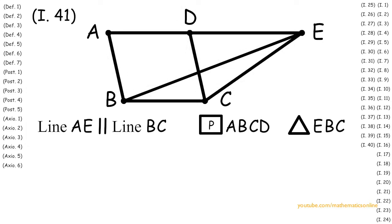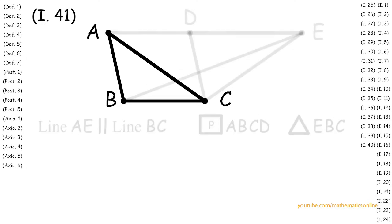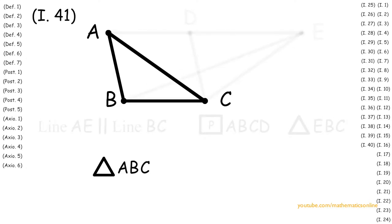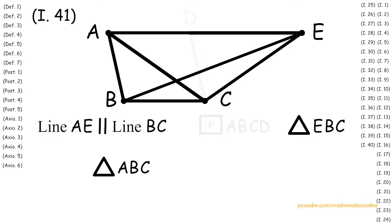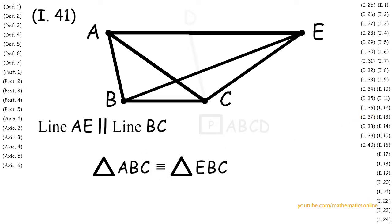First, we create line AC with Postulate 1. Now looking at triangle ABC and triangle EBC, we can see that they have a base in common and they are in the same parallel lines. Therefore, by Proposition 37, triangle ABC is congruent to triangle EBC.